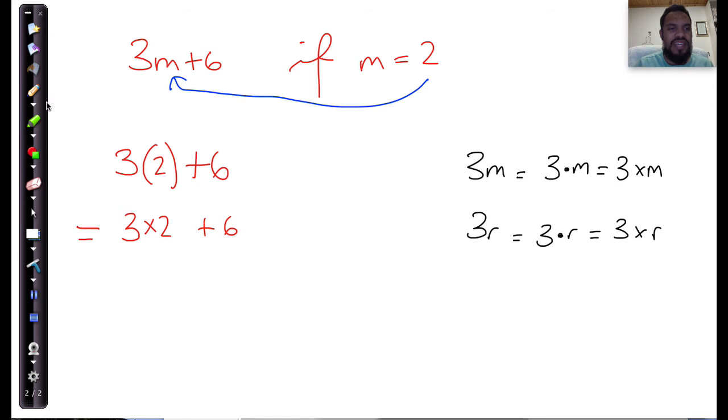And according to BODMAS, I must follow my order of operations. 3 times 2 is 6, plus 6, that gives me a total of 12.